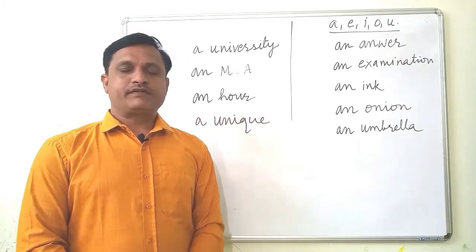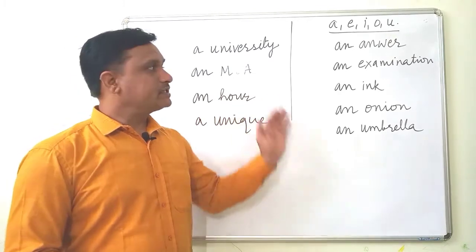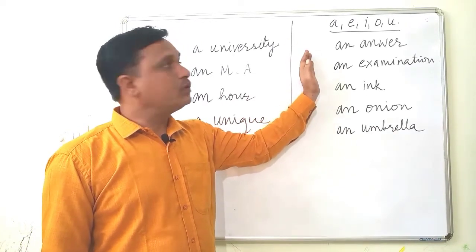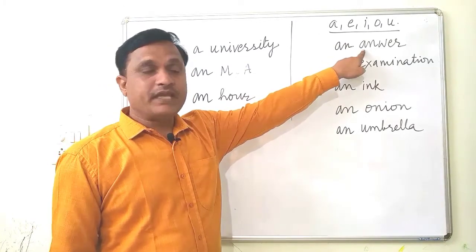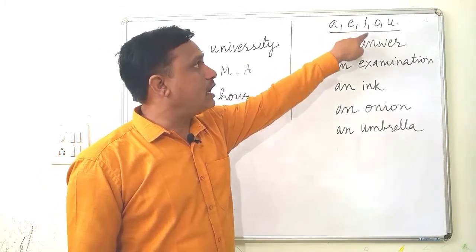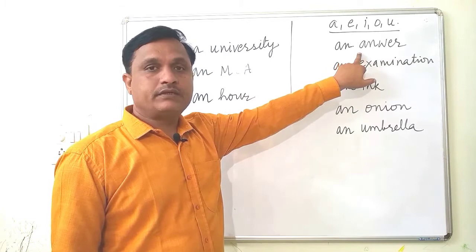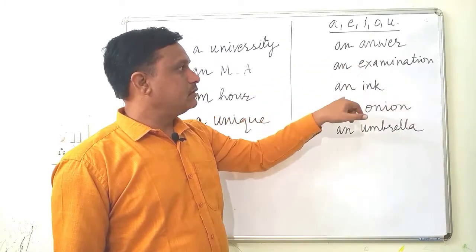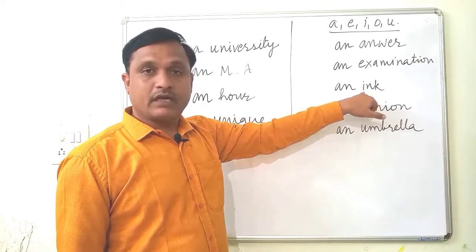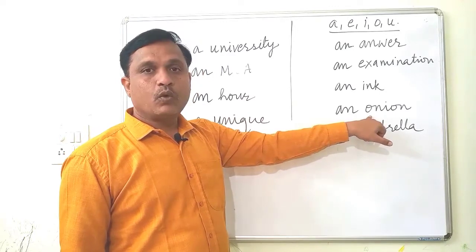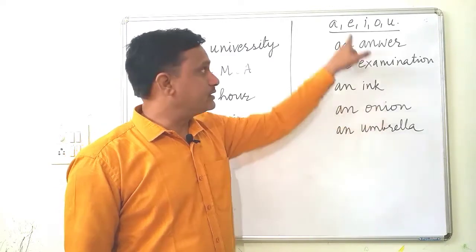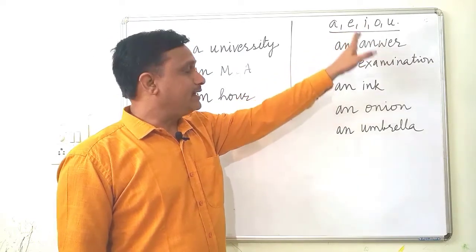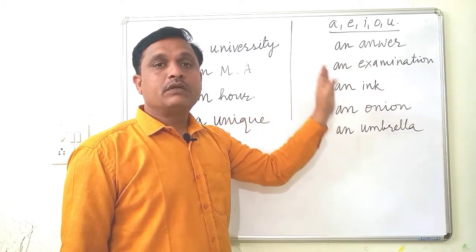In order to understand the difference between A and AN, let's study some more examples. We are often told that AN is used before words which begin with letter A, E, I, O, U. So: 'an answer' (A), 'an examination' (E), 'an ink' (I), 'an onion' (O), 'an umbrella' (U). These all words begin with vowel letters A, E, I, O, U, and hence we use article AN.